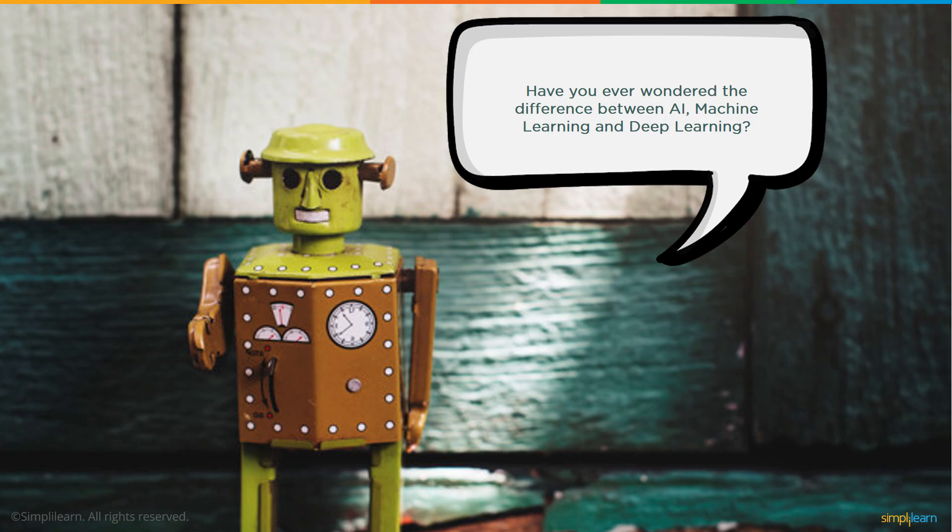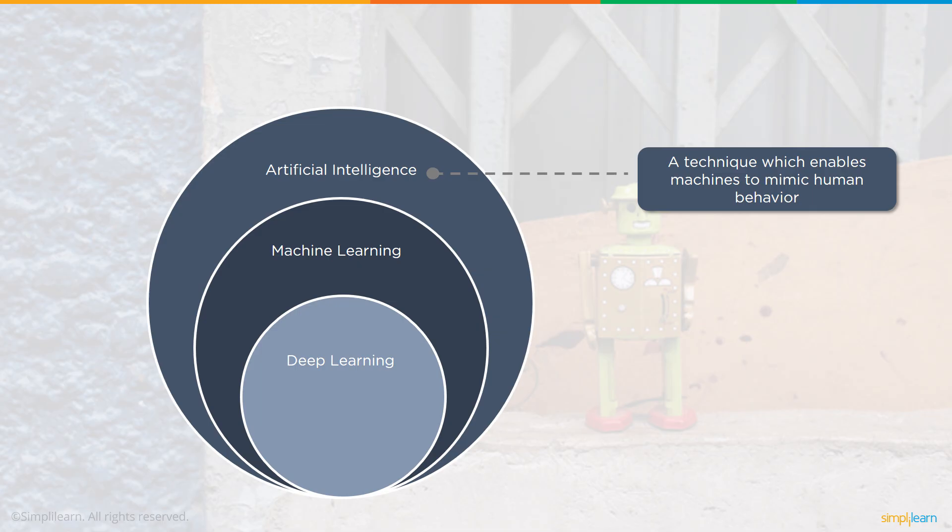Have you ever wondered the difference between AI, machine learning, and deep learning? Artificial intelligence is a technique which enables machines to mimic human behavior.